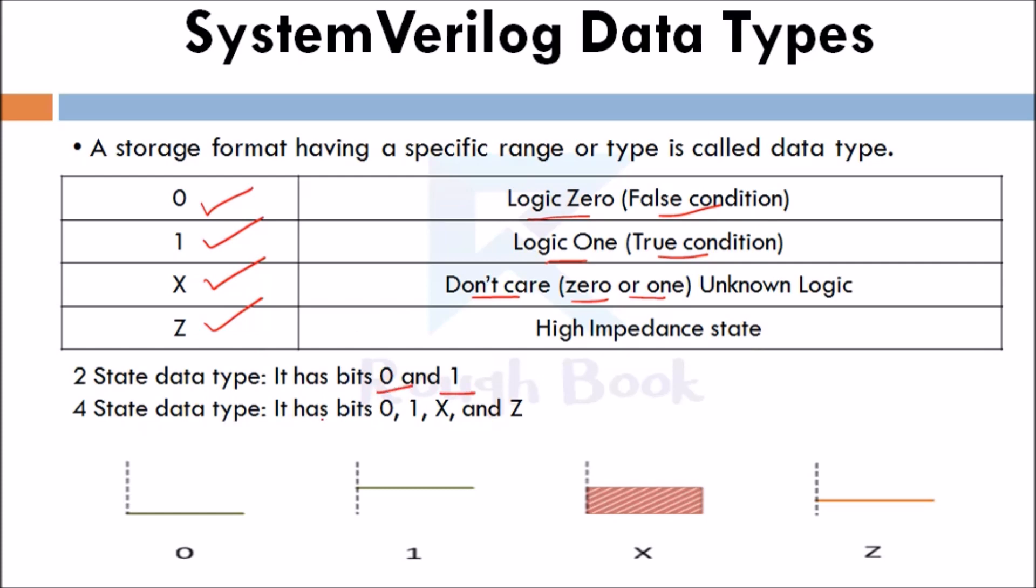So as you can see here, for 0, it is logic 0. For 1, it is logic 1. For don't care, it is shown in the red block, so it is either 0 or 1. So this is high impedance. High impedance is nothing but an unconnected wire. It is between 1 and 0.